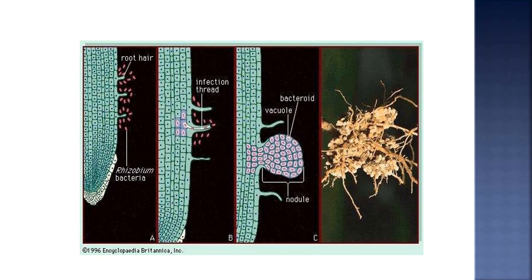In the second part you can see the infection thread which has entered through the root hair — the infection thread is very clear. In the third diagram you can see the bacteroid vacuole clearly, and a nodule is also formed. This is the position in the leguminous plants.